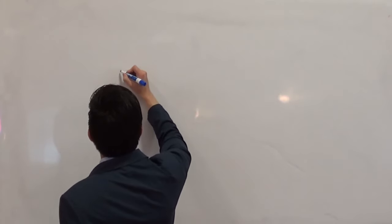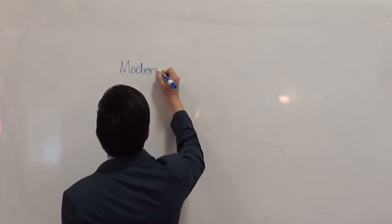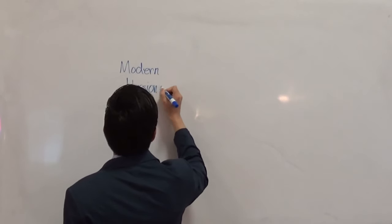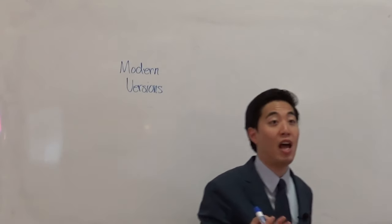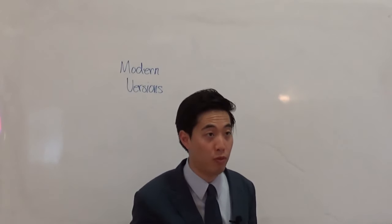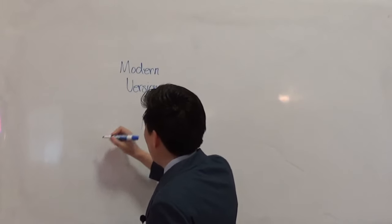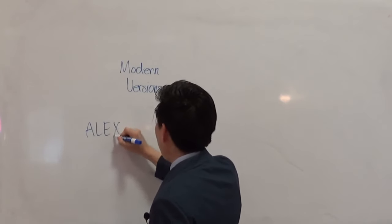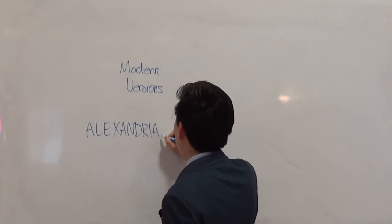What you've got to understand is that modern Bible versions are influenced by the Alexandrian text. Amongst the scholastic world, there are about four main family lines of manuscripts, but scholars generalize into two to make things simple. The two main lines are Alexandrian and Byzantine.